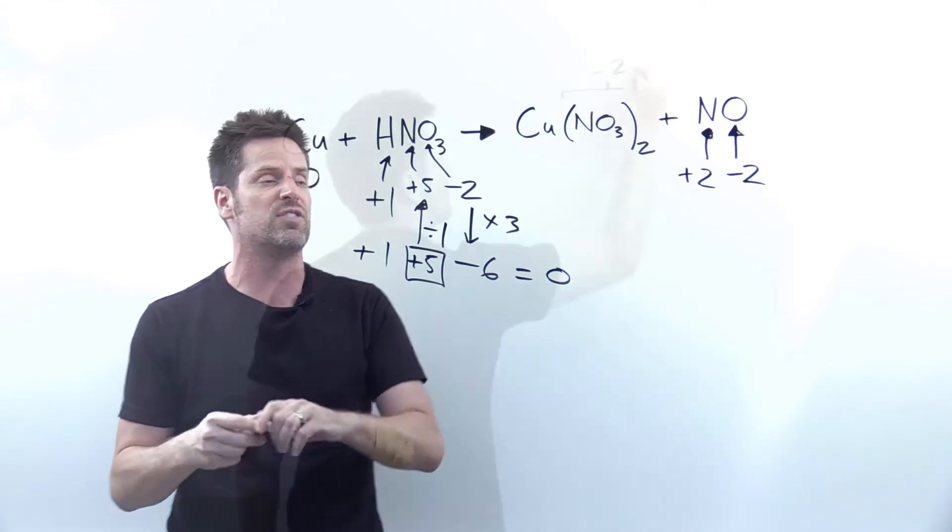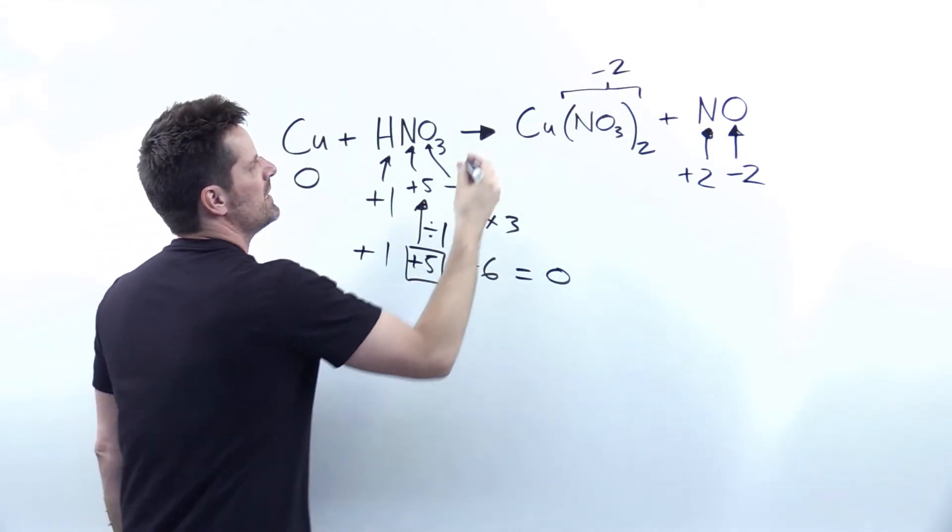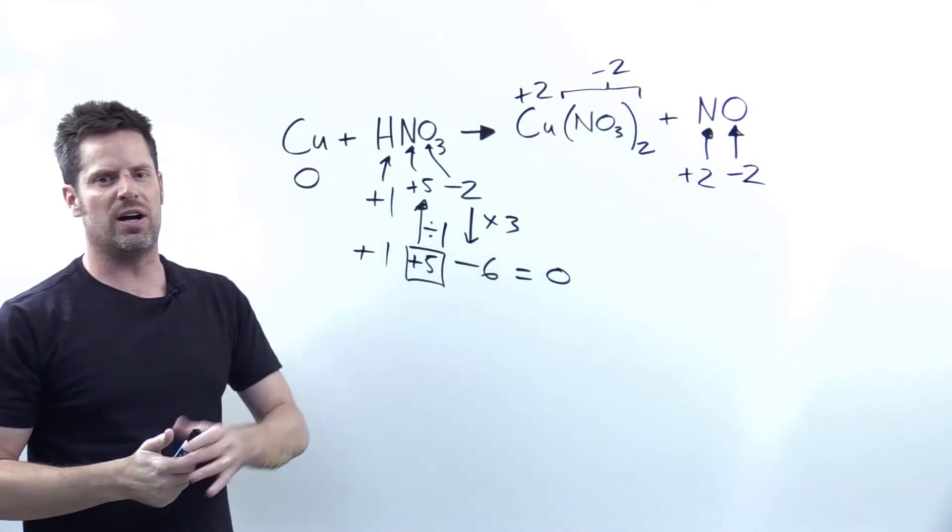Yeah, it's negative one times two is negative two. So what charge must that copper have in order to countervail that negative two? Yeah, it must be plus two. And I think that's as deep as we need to go to identify all the oxidation numbers.